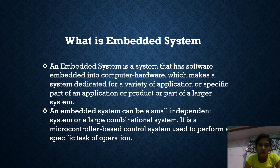It is also a combination of computer hardware and software, and perhaps additional mechanical or other parts, designed to perform a dedicated function. Some embedded systems are part of a larger system or product, as in the case of anti-lock braking systems in a car, like for example a washing machine.